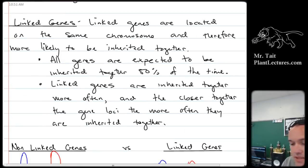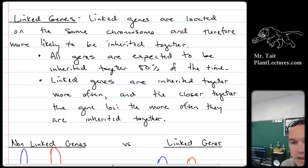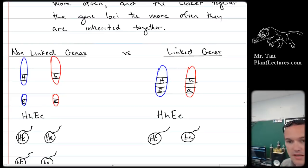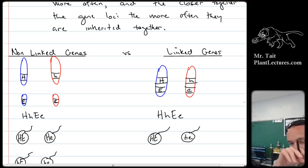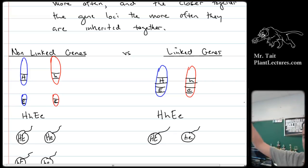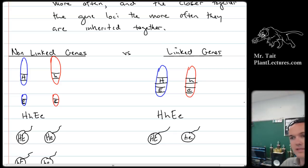Gene linkage is when two genes are on the same chromosome. If two genes are on the same chromosome, they will be inherited together more than 50% of the time. How often they get inherited together is determined by how close together they are on the chromosome — if they're right next to each other, they might be inherited together 99% of the time, but if they're really far apart, it might be closer to only 54%. The way we spot linked genes is by looking at the parents and the offspring. If the offspring have the exact same phenotypic combinations as the parents — say one parent has blonde hair and blue eyes and a child also has blonde hair and blue eyes, while the other parent has brown hair and brown eyes and that child matches — they didn't get combinations of those traits. That means there was probably gene linkage.